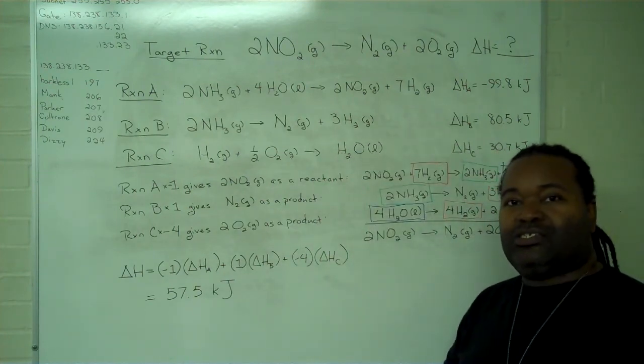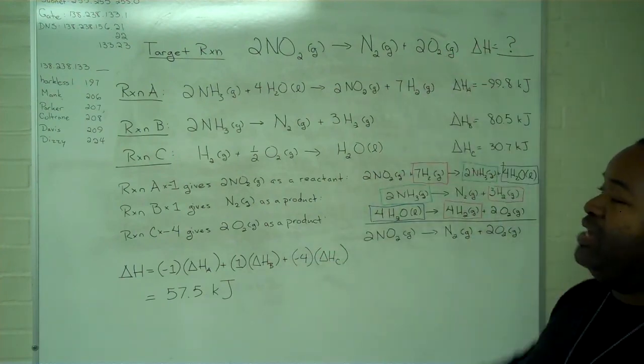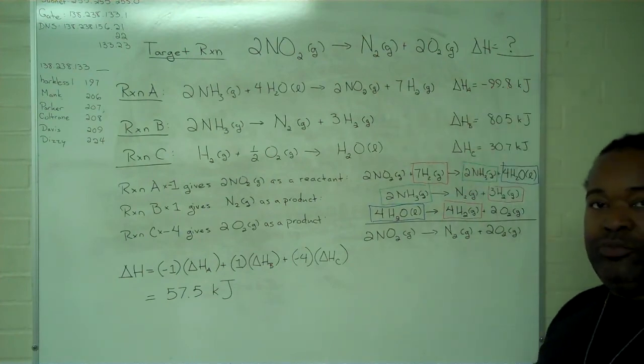And this is how you use Hess's law to determine the delta H value for a target reaction, given that you have working reactions with known changes in enthalpy. Thank you very much.